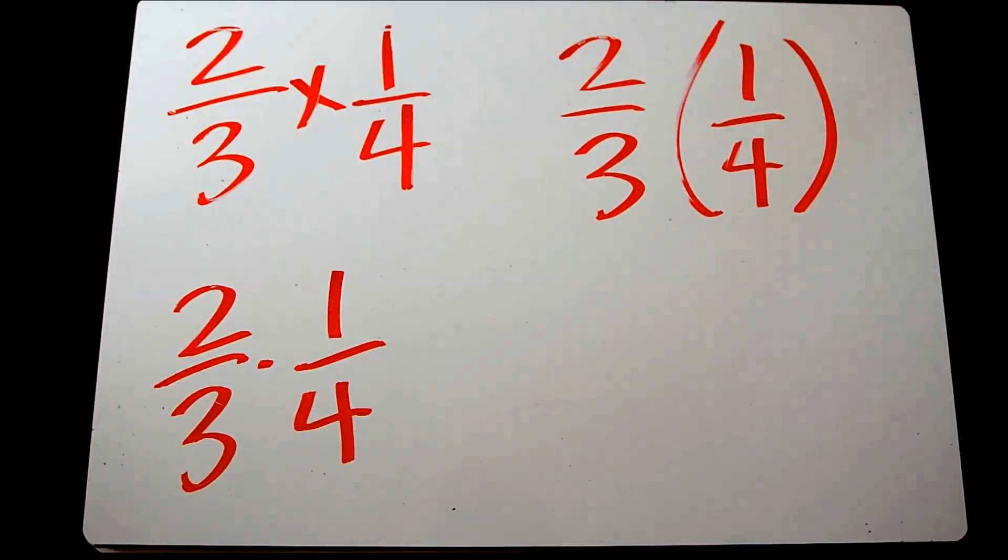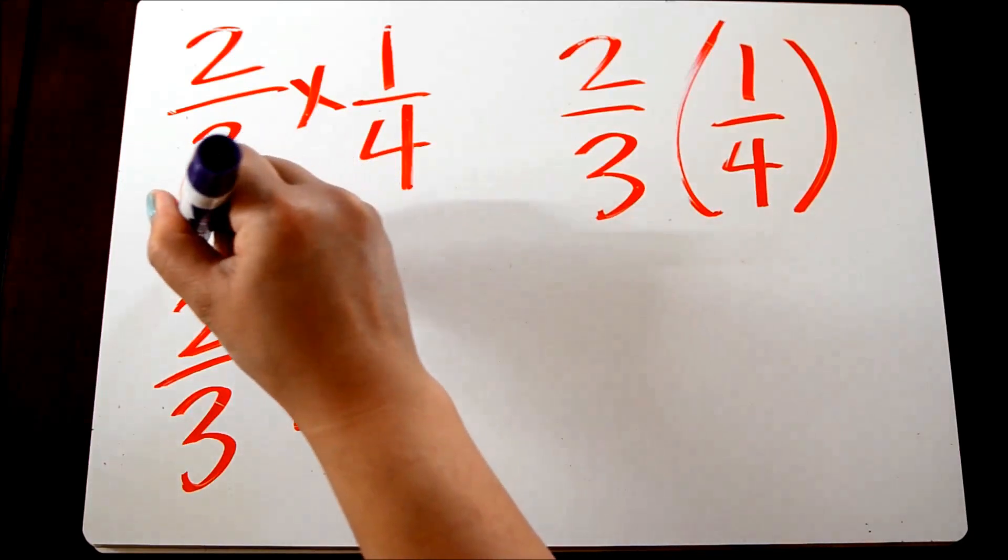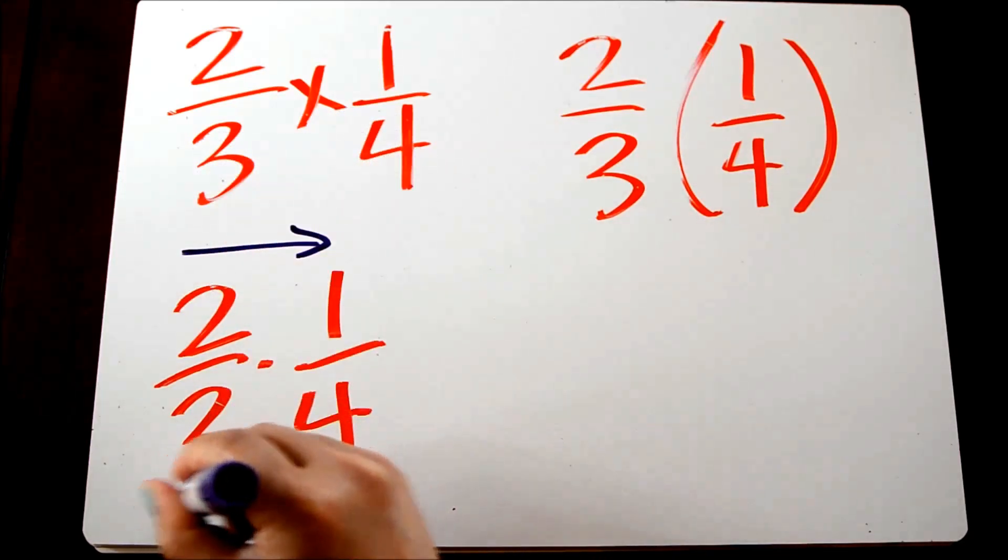Multiplication of fractions can show up in a lot of different ways: with the traditional multiplication symbol, parentheses, or the multiplication dot. But either way, what we're going to do is multiply straight across in the numerator and the denominator.